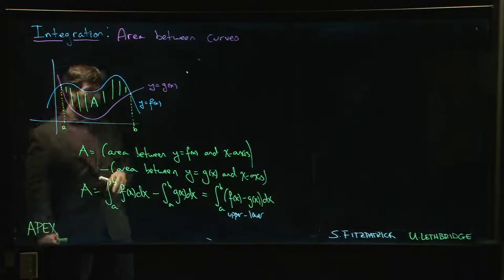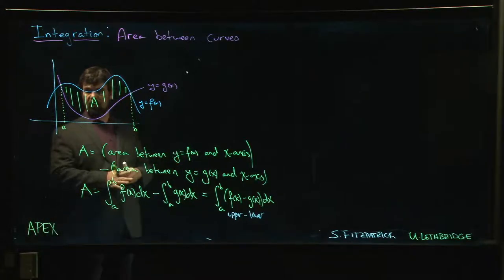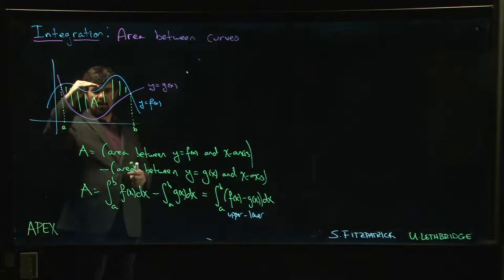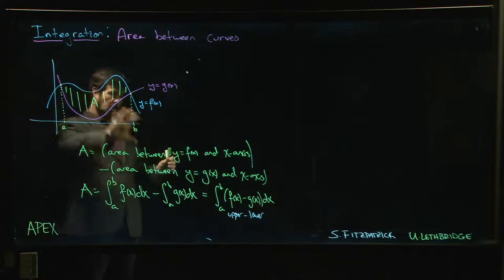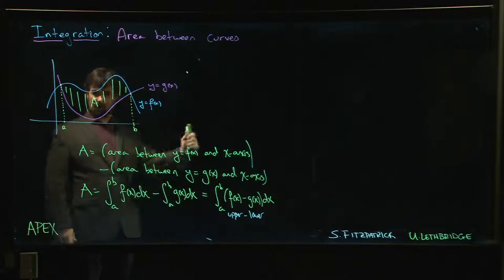One other note: I've drawn this with both curves above the x-axis, but we could have one above, one below. We could have both of them below. We could have them above for a little while and then below later on. Doesn't matter—formula is always going to be the same: upper minus lower. Doesn't matter how the curves are oriented.